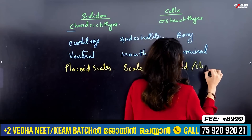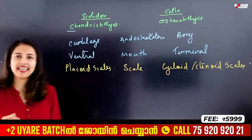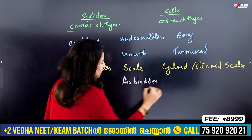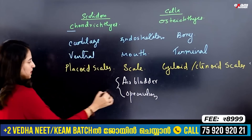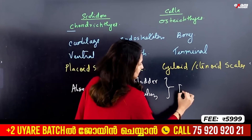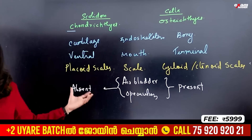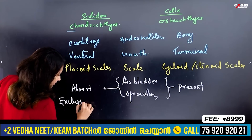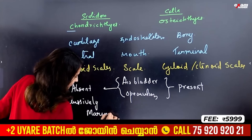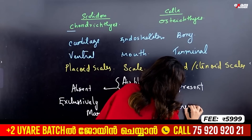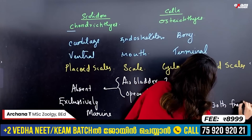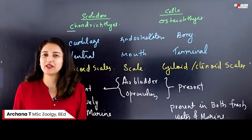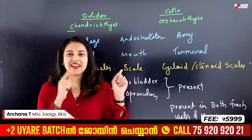In Osteichthyes, scales are cycloid or ctenoid. Air bladder is absent in Chondrichthyes and present in Osteichthyes. Chondrichthyes are exclusively marine, while Osteichthyes are found in both fresh water and marine environments. These are very important points to remember for the exam question.